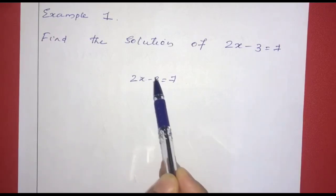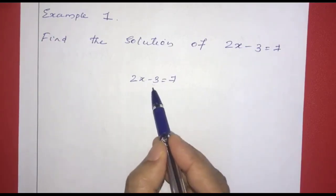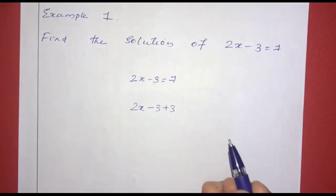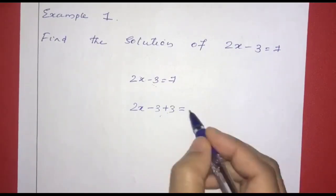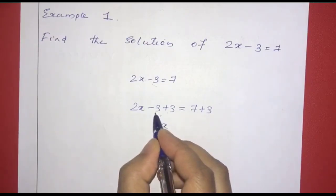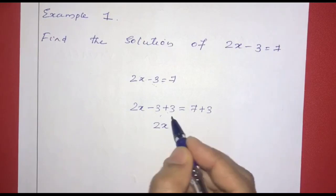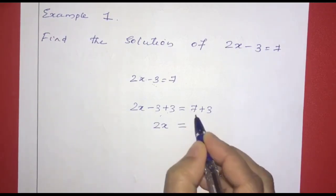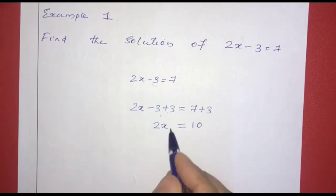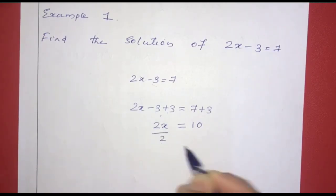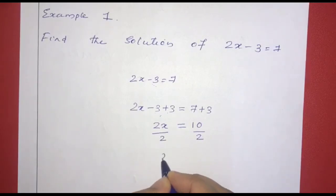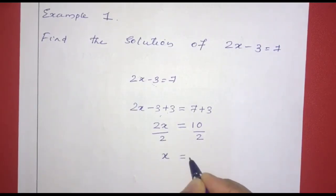To solve 2x minus 3 equals 7, we add plus 3 to both sides. On the left-hand side, 2x minus 3 plus 3 becomes 0, leaving 2x. On the right-hand side, 7 plus 3 equals 10. So 2x equals 10. Now we divide both sides by 2. On the left, 2x divided by 2 gives x. On the right, 10 divided by 2 gives 5. So x equals 5.